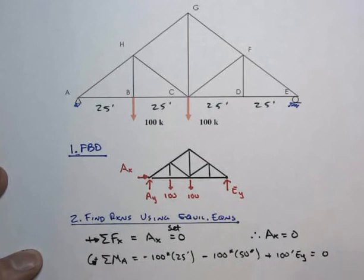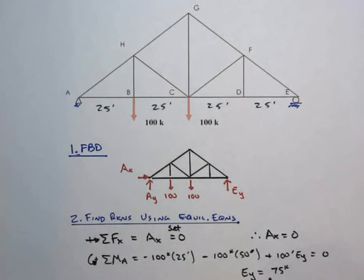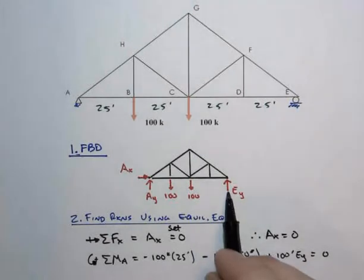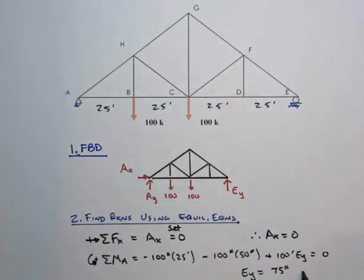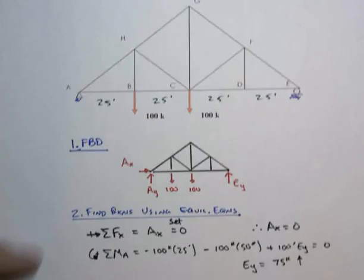We solve for EY. There's 100 times 25, so that's 2,500. There's 5,000, so that's 7,500. And then divided by 100. And so ultimately, you're going to get that EY is equal to 75 kips. Plus, in this particular notation, means that it's in the same direction as we've shown on the free body diagram. And so it is acting up.